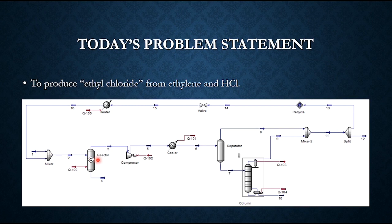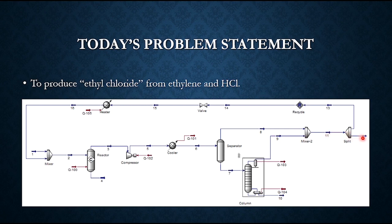We are assuming a conversion reactor to make it simpler; however, once we talk about rigorous kinetics, we would need to use PFR or CSTR type reactors. The vapor from this reactor is compressed to high pressure, which increases the temperature, then it is cooled down and sent to a separator. As a result, streams seven and eight are produced — stream seven goes to the distillation column, and stream ten contains pure ethyl chloride.